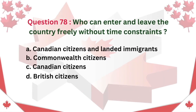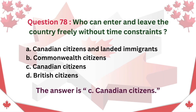Question 78: Who can enter and leave the country freely without time constraints? A. Canadian Citizens and Landed Immigrants. B. Commonwealth Citizens. C. Canadian Citizens. D. British Citizens. The answer is C: Canadian Citizens.